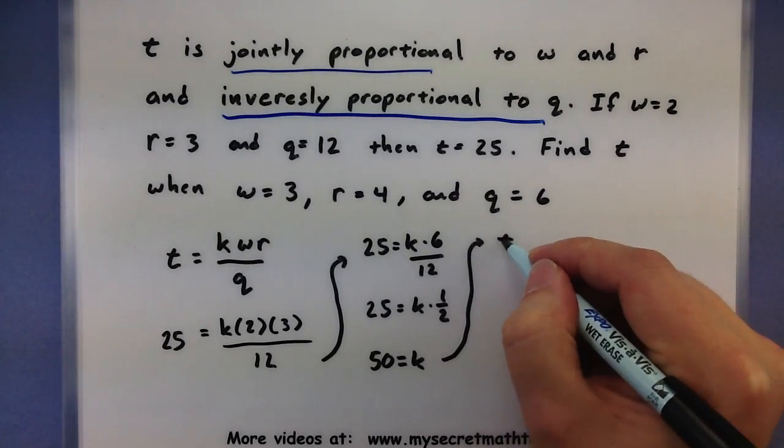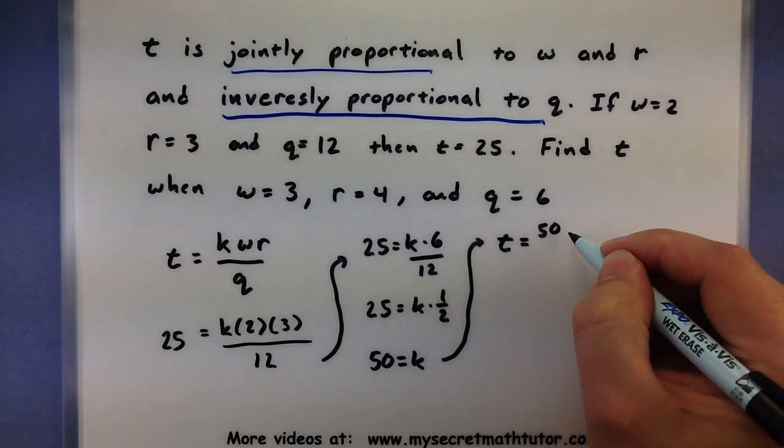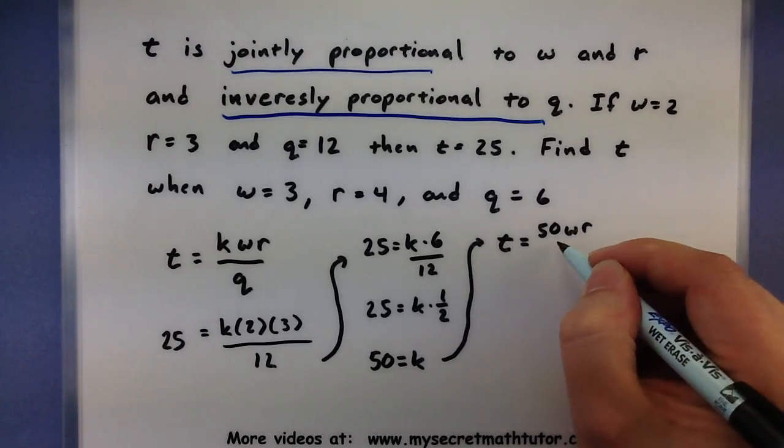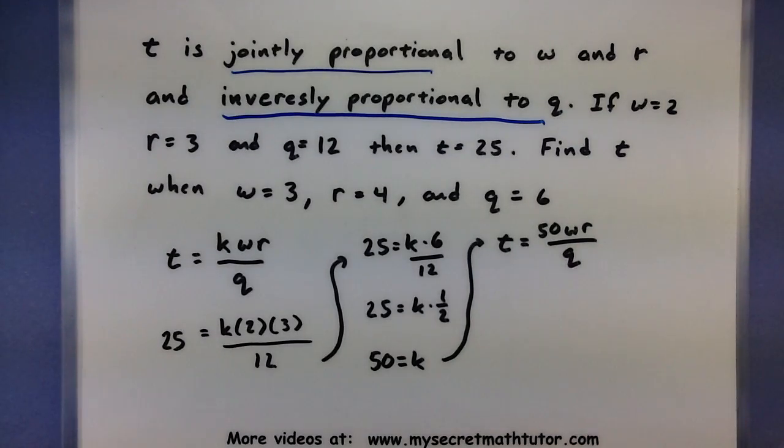So now our formula looks like this: t equals 50 w r all over q.